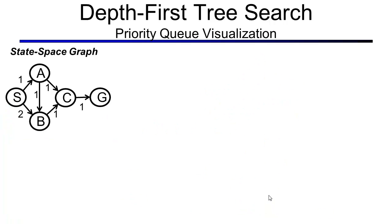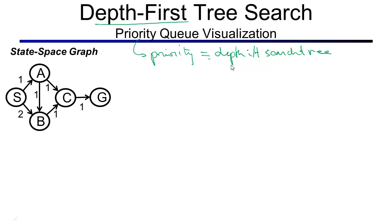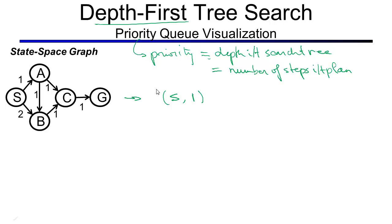Now let's look at depth first tree search again, but do a priority queue visualization. The priority queue will use depth in the search tree as its priority, which corresponds to the number of steps in the plan. We initialize with the start state, so our priority queue consists of just S with a priority of 1. There's only one element in the priority queue, so that's the one that gets taken out. After expanding S, we have elements A and B on the priority queue — really the plans going from S to A and S to B.